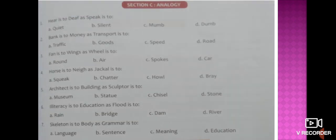Now, moving to our section, Analogy. This is the activity for you. 1. Hear is to deaf as speak is to 2. Bank is to money as transport is to 3. Fan is to wings as wheel is to 4. Horse is to neigh as jackal is to 5. Architect is to building as sculptor is to 6. Literacy is to education as flood is to 7. Skeleton is to body as grammar is to. Solve this MCQ.